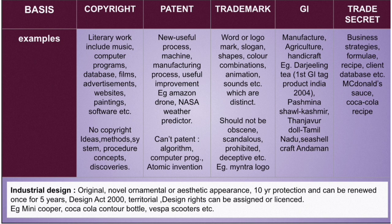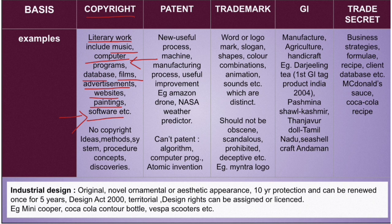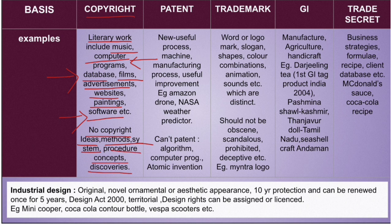Let's talk about important examples of each type of IPR. For copyright: literary work, music, computer programs, databases, films, advertisements, websites, paintings, and software — so software comes under copyright, not patent. Computer programs also come under copyright, not patent. Database is also part of copyright. In exams, they may ask which of the following cannot be included under copyright. There is no copyright for procedures, concepts, or discoveries.